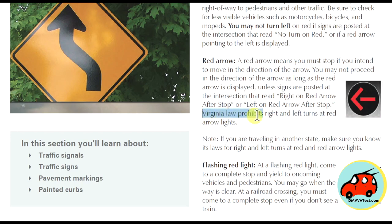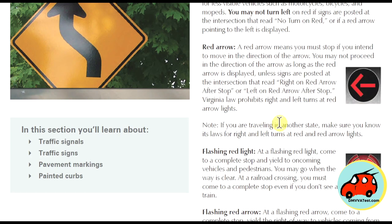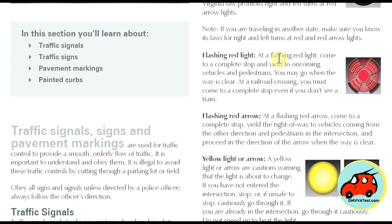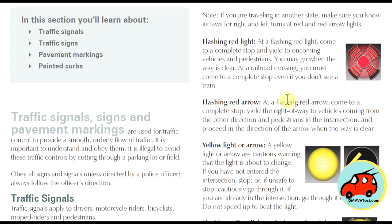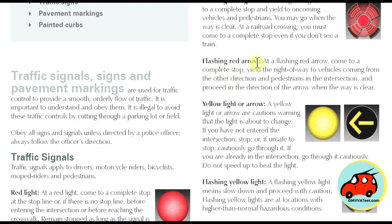Virginia law prohibits left and right turns at red arrow lights. At a flashing red light, you have to come to a complete stop and yield to oncoming traffic and pedestrians — you may go through when it's clear. At railroad crossings, you must come to a complete stop even if you don't see a train. If you see a flashing red arrow, you also have to come to a complete stop and yield the right-of-way to vehicles coming from the other direction and pedestrians in the intersection.